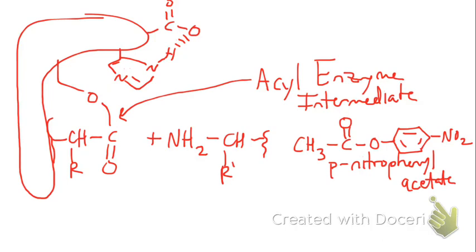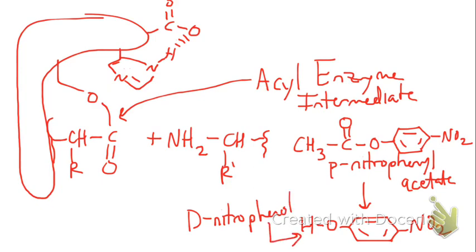When we incubate chymotrypsin or these other peptidases in the presence of P-nitrophenyl acetate, it removes the acetate group off of this and it makes P-nitrophenyl phenol. When P-nitrophenyl acetate turns into P-nitrophenyl, it becomes yellow that we can visualize. And so when we do this type of analysis, we can measure the rate with which we get release.